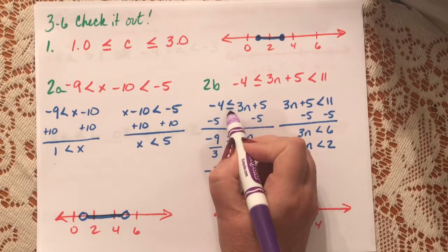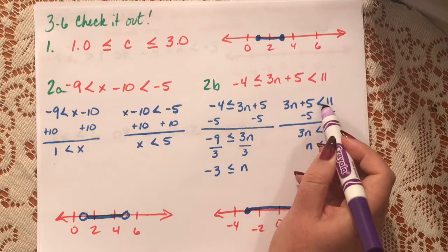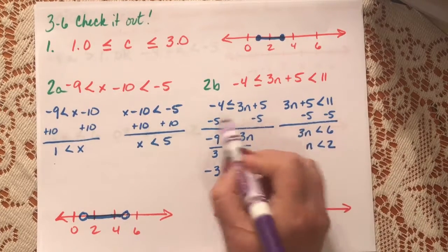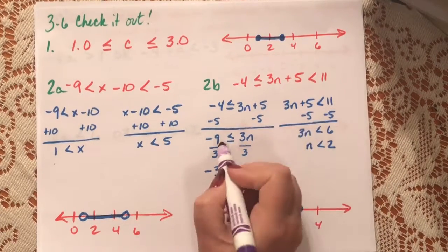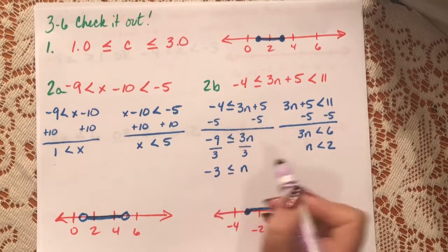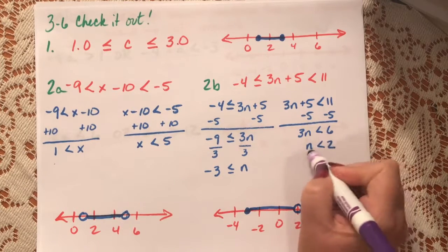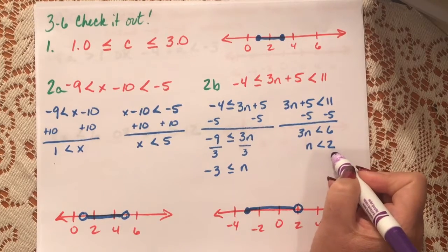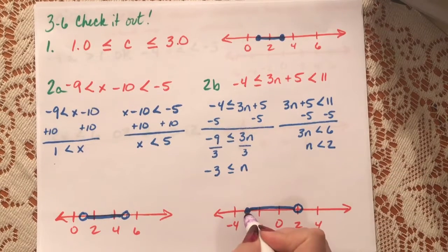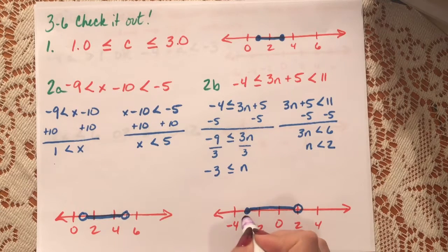For the second part of Check It Out 2: negative 4 is smaller than or equal to 3n plus 5, and that is smaller than 11. Subtract 5 from both sides: negative 9 is smaller than or equal to 3n. Divide by 3: negative 3. Then 3n is smaller than 6 — divide by 3: n is smaller than 2. So we have a closed circle at negative 3, an open circle at 2, and n is smaller than 2 and greater than negative 3. This is our graph.